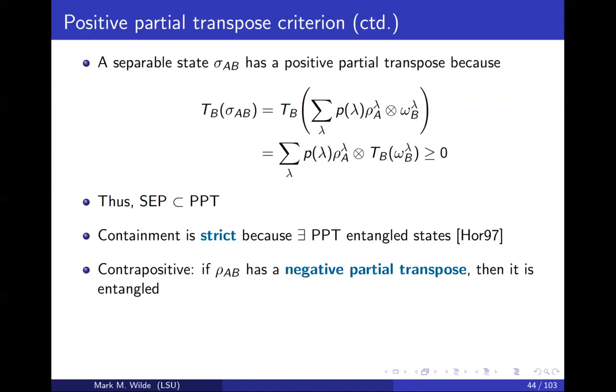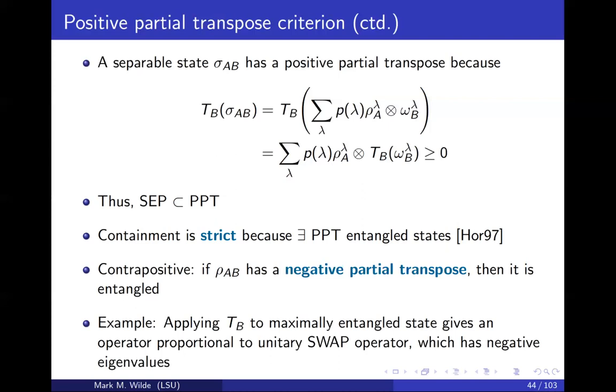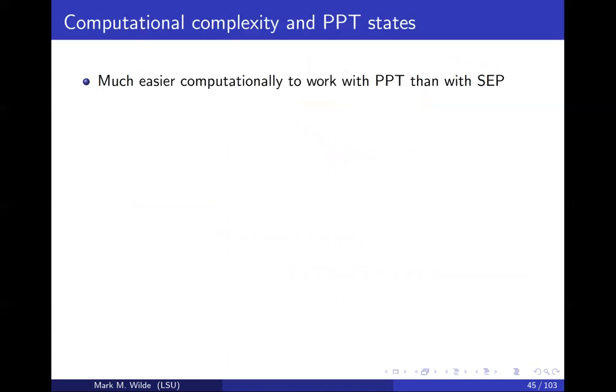As it turns out, there do exist these exotic PPT entangled states. As an example, you can try out this, something you can plug into MATLAB. Remember in the previous lecture I was talking about QETLAB that works with MATLAB. You can apply the partial transpose to the maximally entangled state, and then what you'll get is a matrix that's proportional to the unitary swap operator, and the swap operator has negative eigenvalues.